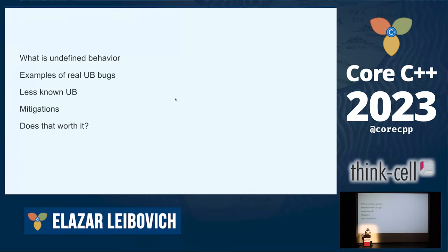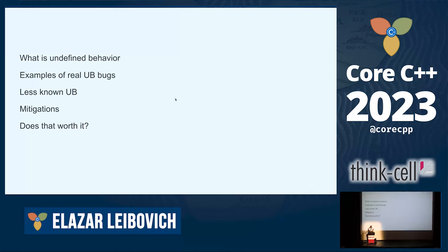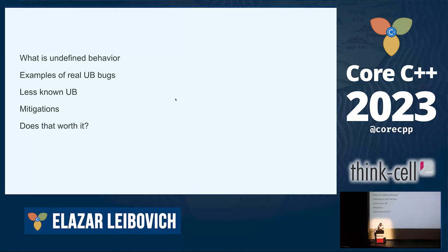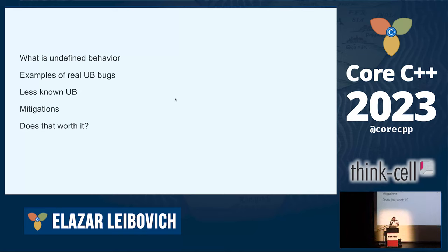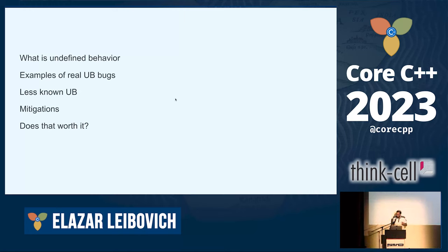I want to show you examples of real-world undefined behavior related bugs. I'll speak a little bit about less-known undefined behaviors, and I'm going to survey mitigations — a way to cope with undefined behaviors — and debate whether or not the optimizations based on undefined behavior carry their weight and are really cost-efficient.